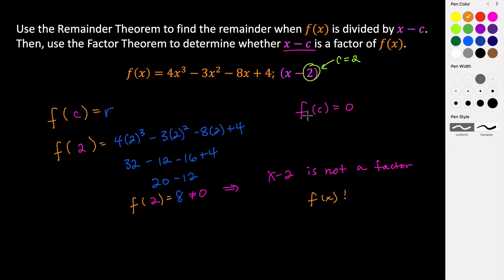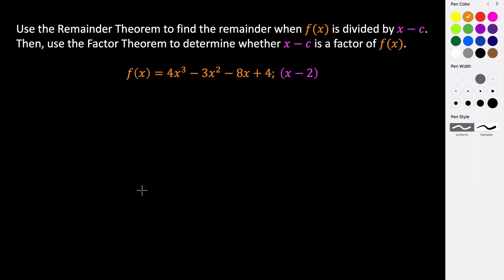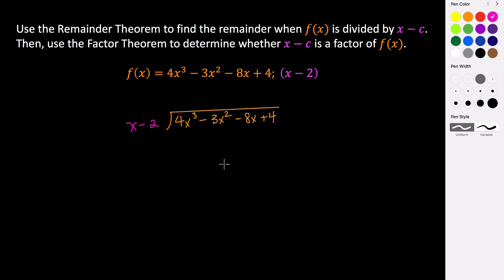We can actually confirm that x minus 2 is not a factor of f of x by doing polynomial long division. So if we take a look at doing this long division we can see that x minus 2 is not a factor. So let's confirm that here: 4x cubed minus 3x squared minus 8x plus 4, divided by x minus 2. In polynomial long division we really only care about the leading term and the next term of highest degree in our polynomial, so we ask ourselves how many times does x go into 4x cubed?